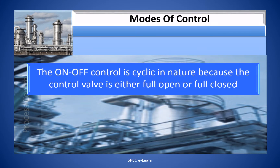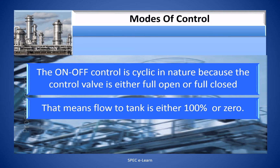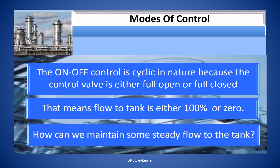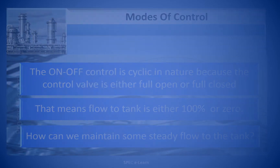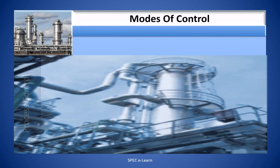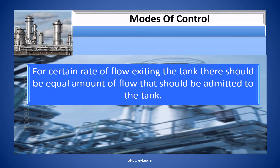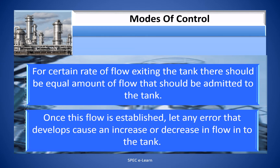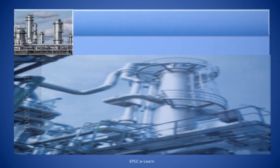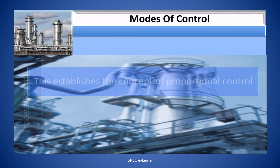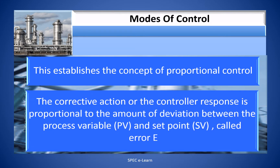The on-off control is cyclic in nature because the control valve is either fully open or fully closed — meaning flow to the tank is either 100% or 0. To maintain some steady flow to the tank, for a certain rate of flow exiting the tank, there should be an equal amount of flow admitted. This establishes the concept of proportional control: the corrective action or the controller response is proportional to the amount of deviation between the process variable and the set point, called the error E.